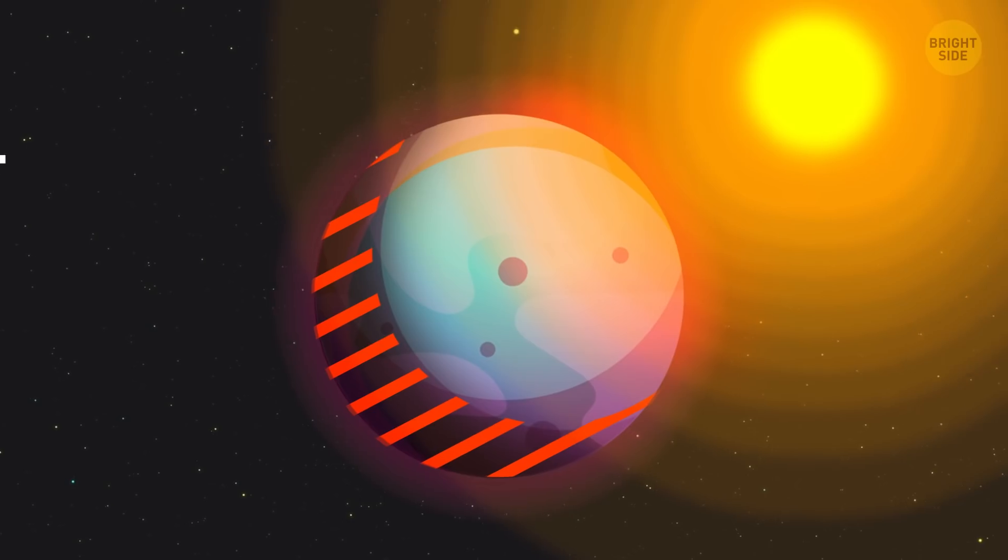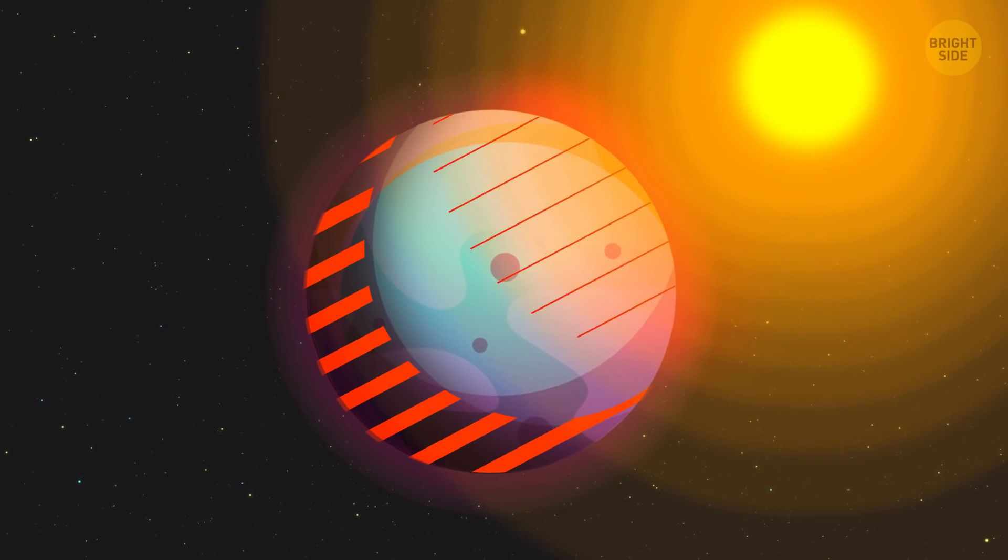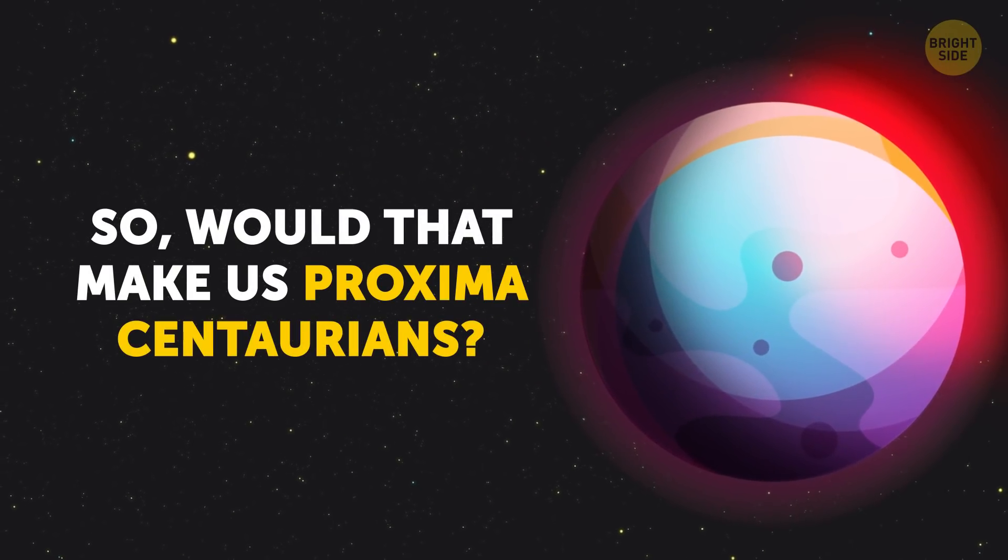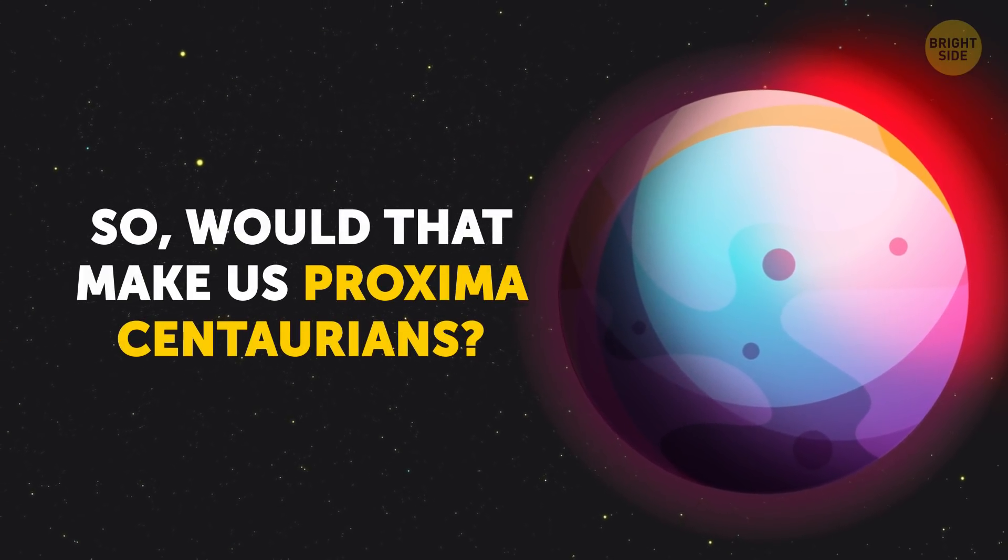Although one side of the planet never sees starlight and the other is literally baked by the sun, the planet's equator could be quite livable, even for humans. So would that make us Proxima Centaurians? Proxima Centauri Bs? And like I said, we'll work out the details later.